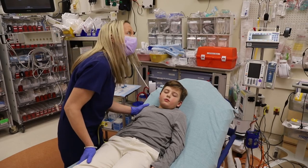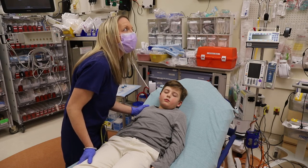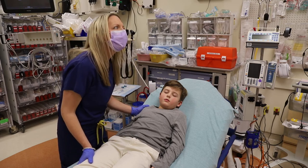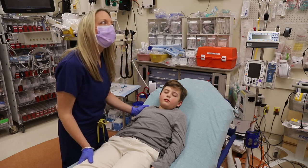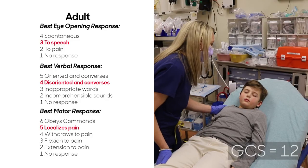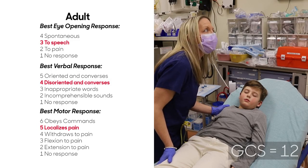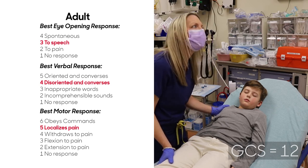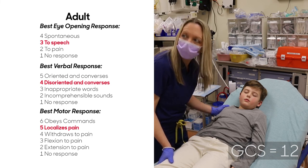Watch how the resident looks at the poster as they perform each section of the GCS. Make sure to call out each part of the GCS out loud so that everyone in the room can hear you. Eyes are opening to voice. Eyes are three. Patient is disoriented but responding. Verbal is a four. Patient is not obeying commands but is able to localize pain. Motor is a five. The nurse documenting in the code room will add the scores together and will state the total. The documenting nurse will respond with the GCS is 12.